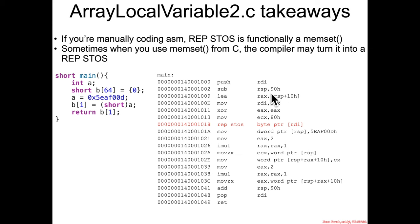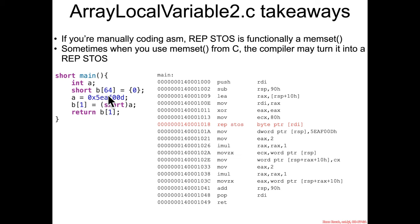Allocate some space on the stack, calculate an address, put it into RAX, move RDX to RDI — that is probably the destination for the repstoss, that's probably the beginning of B, B[0] for instance.